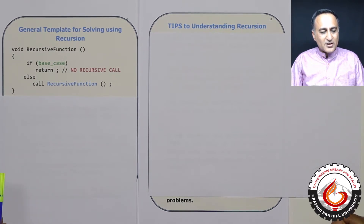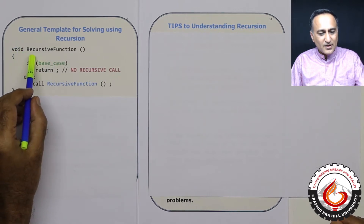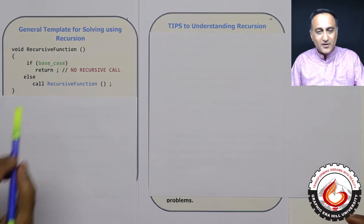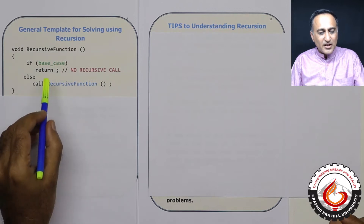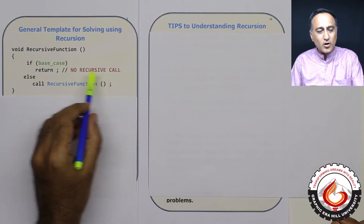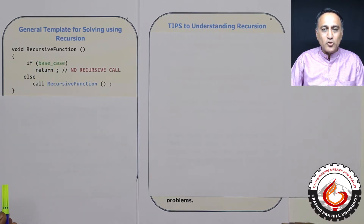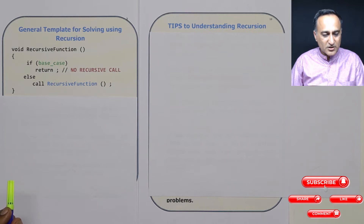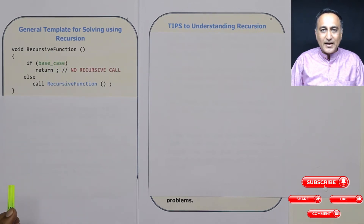The general template for a recursive function is it's going to be generally void, int, or float depending on what that recursion is doing. You're going to have the recursive function name. The first thing you should decide is ask yourself how long should this recursion continue — that is called the base case. When the base case happens, it will generally have a return statement and there will be no recursive call. Else, I am going to keep calling the recursive function so that the bigger problem is broken down into a number of sub-problems.